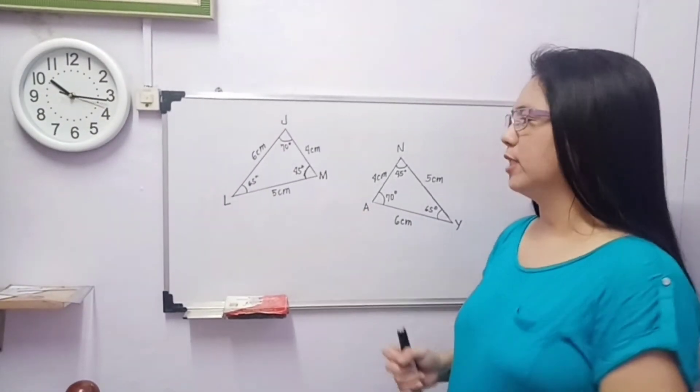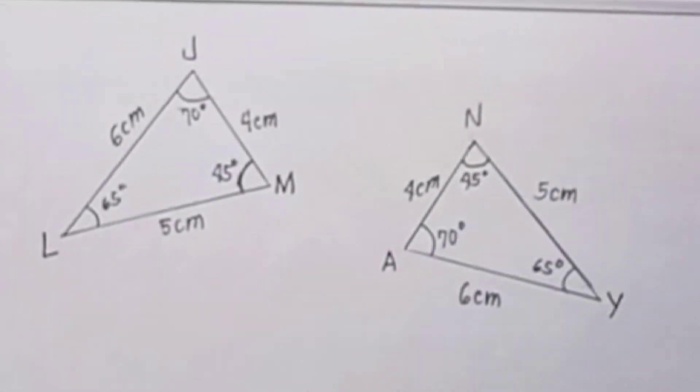Subukan natin itong dalawang figures na ito. So in this case, wala tayong markings. Ang nandito ngayon ay mga measurements. So what we are going to do, kailangan, pagtapatin natin yung corresponding parts niya, para masabi natin that they are congruent. Let's start with the sides. So we have side JM is equal to NA.